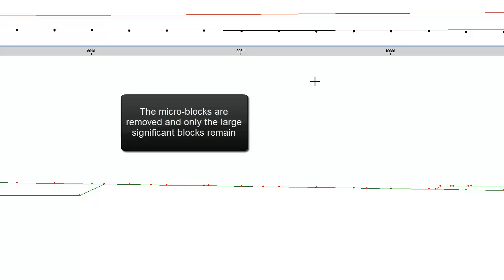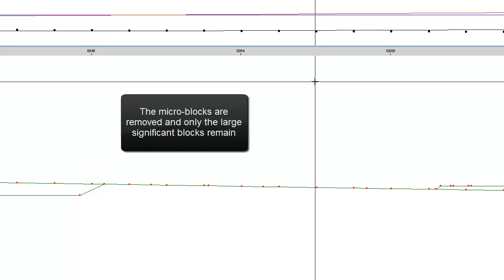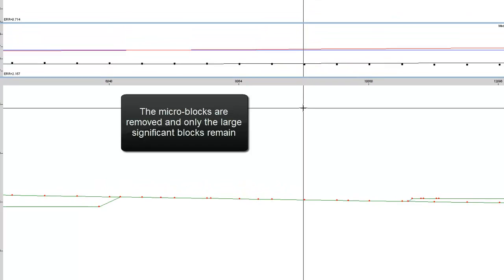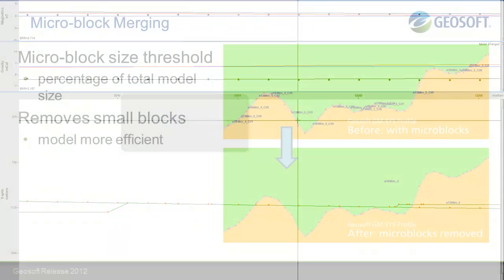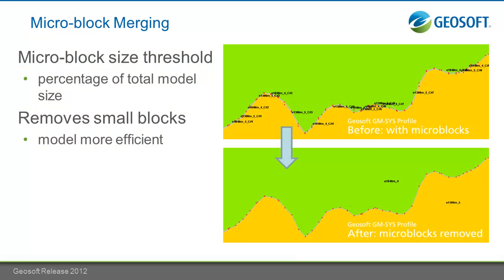This allows you to smooth out your horizons, cleaning out your dataset, and now work with the significant blocks that you have. This feature makes it really easy for clients working with models all the time to not have to take the time to manually clean up the horizons.